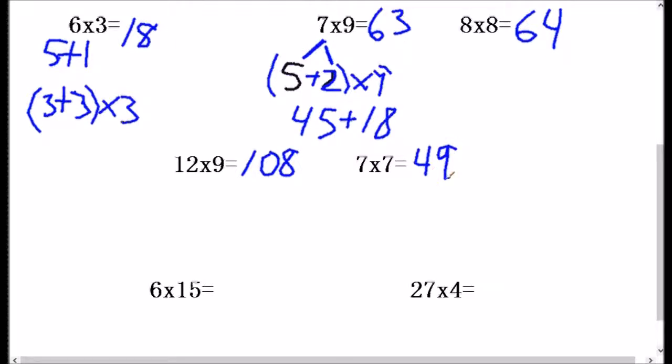6 times 15. Whoa, these are getting more challenging. I think we should break up that 15 into 10 plus 5. Separating the place values makes it a lot easier to add a lot of times. So 6 times 10 is 60. 6 times 5 is 30. 60 plus 30 is 90.